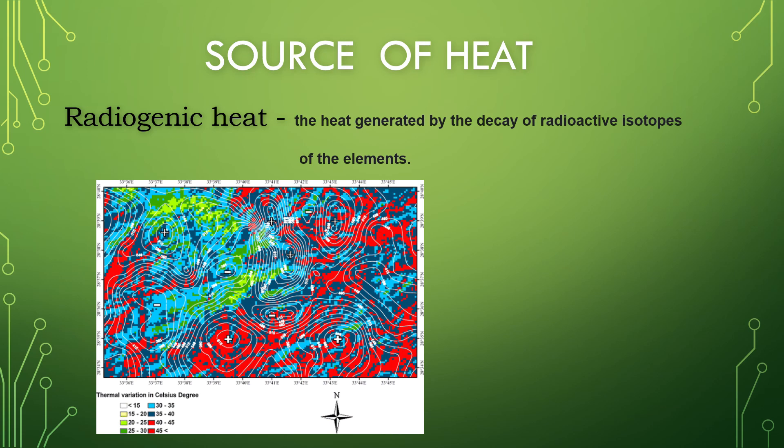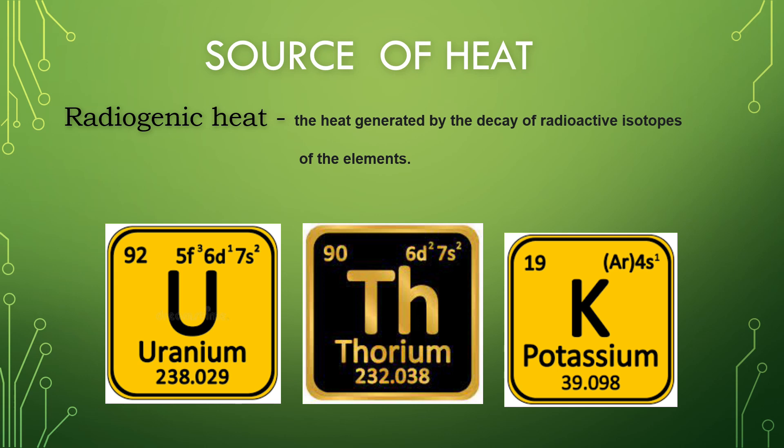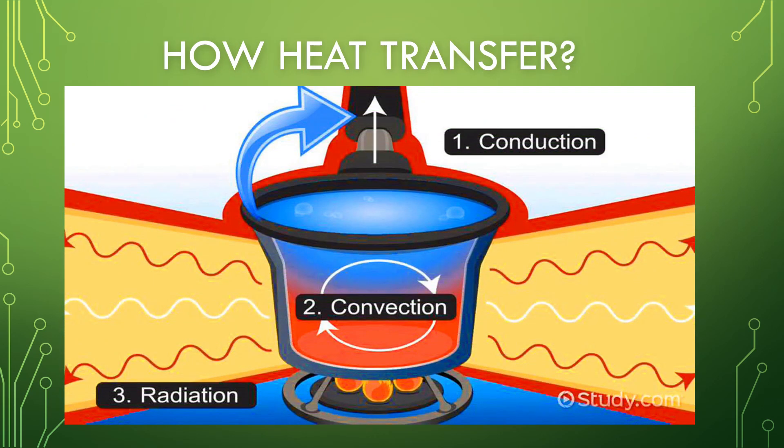Radiogenic heat is the heat generated by the decay of radioactive isotopes. The thermal energy is released as a result of spontaneous nuclear disintegration. It involves the disintegration of natural radioactive elements inside the Earth such as uranium, thorium, and potassium.